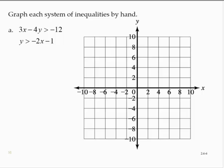Graph each system of inequalities by hand. We're given 3x minus 4y is greater than negative 12, and y is greater than negative 2x minus 1. I'll use purple for the first line and orange for the second line.